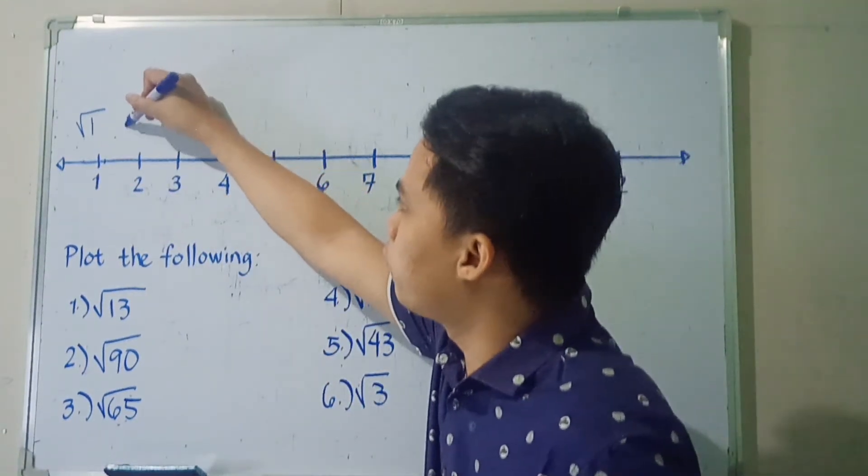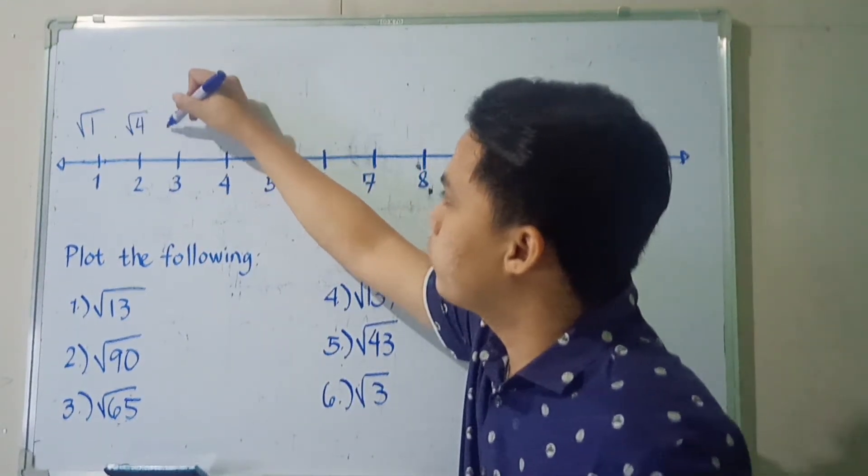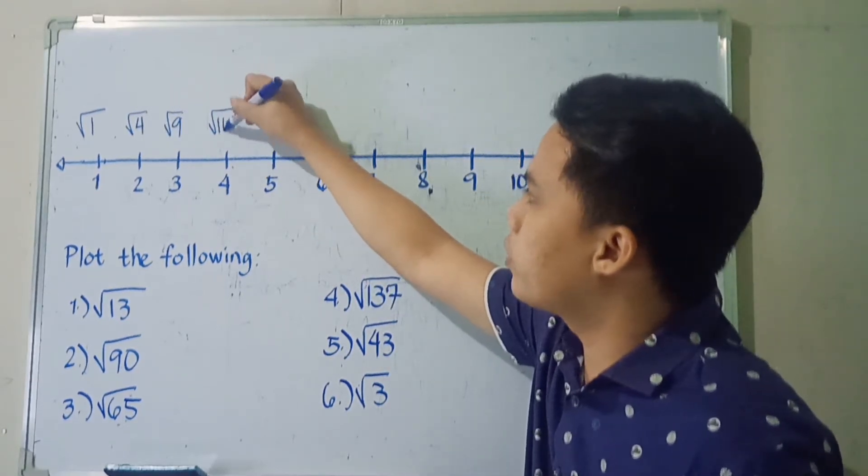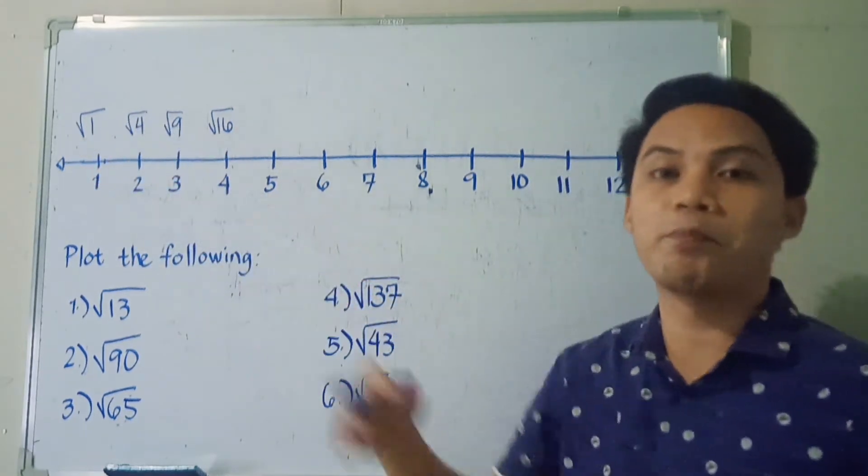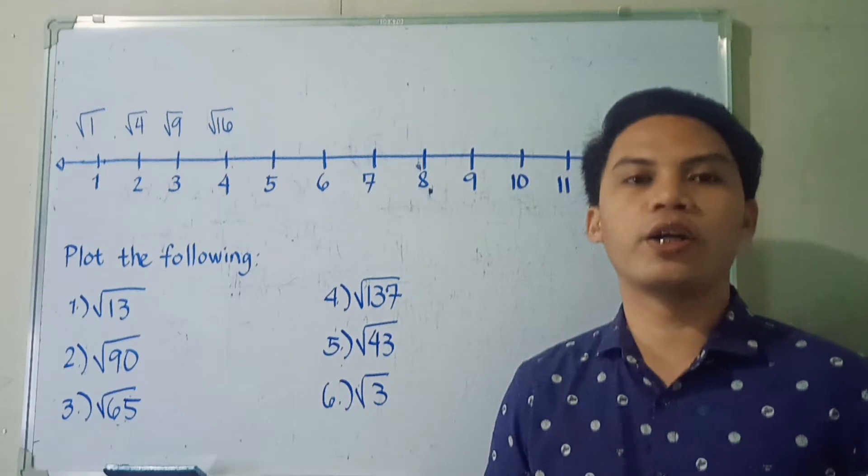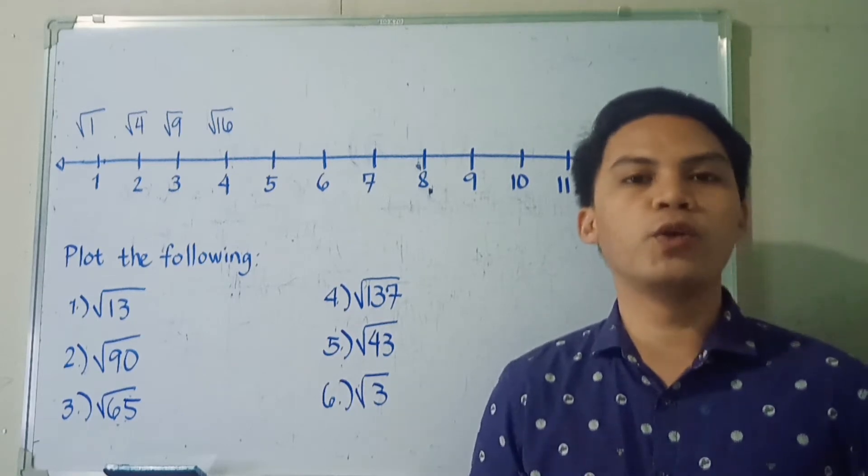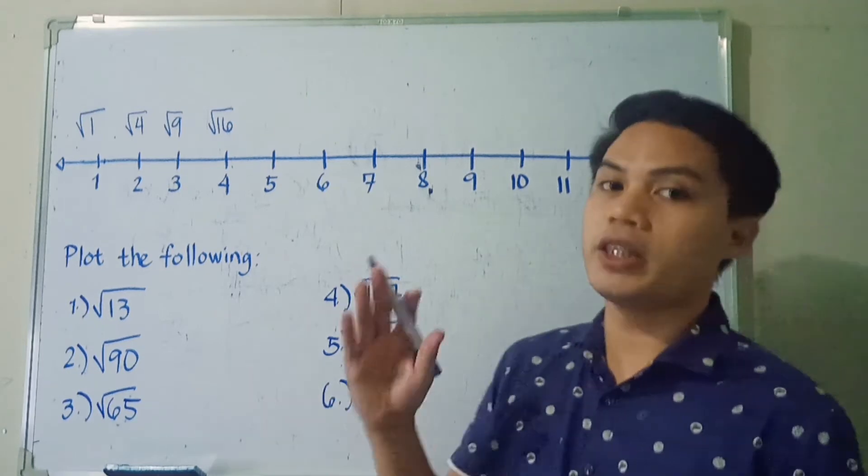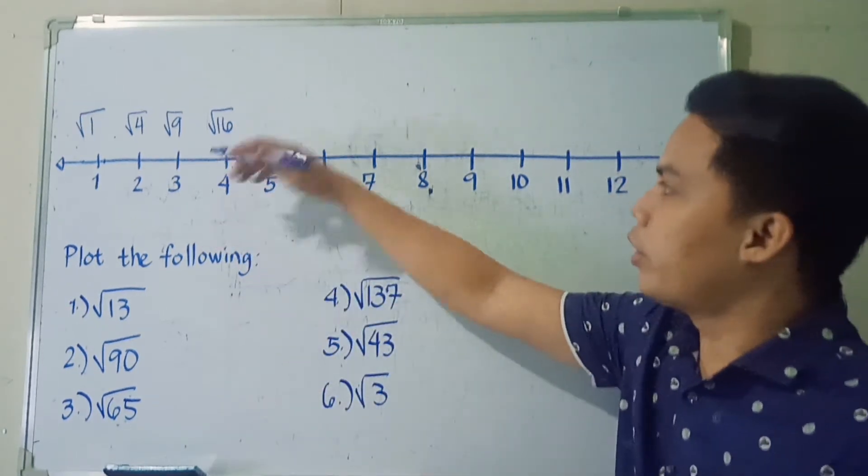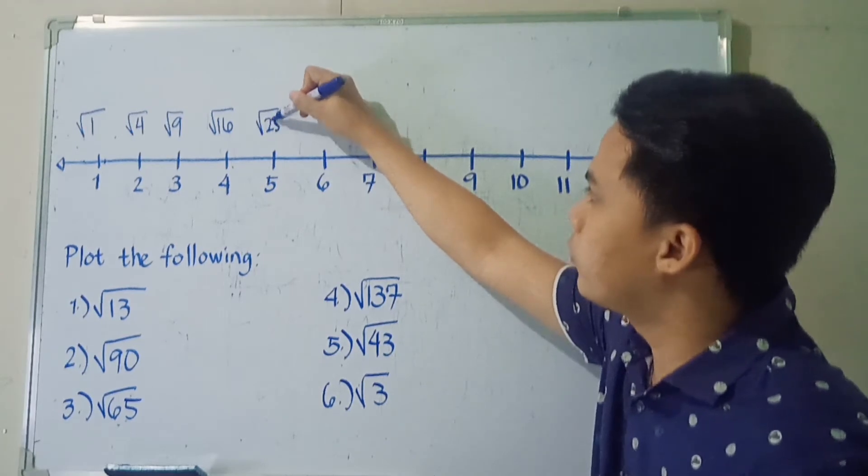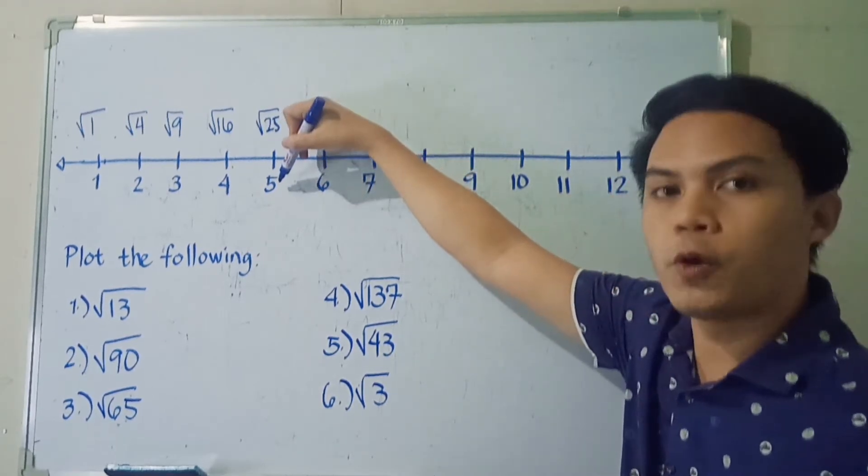Then we also have 4 or square root of 4, square root of 9, square root of 16. So these are our first 4 perfect squares. When we say perfect square, those are numbers where their square root are integers, positive integers. Next would be square root of 25, which is of course 5. We'll align them.